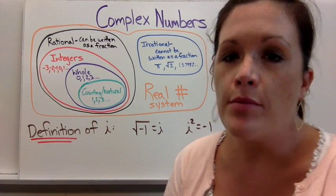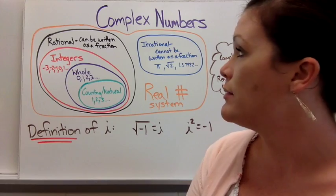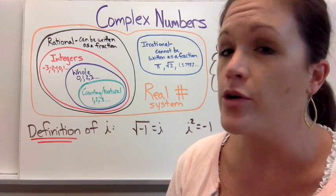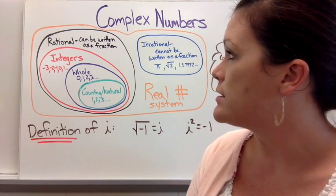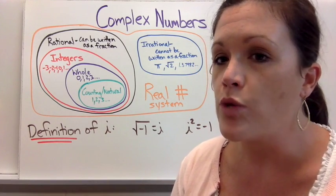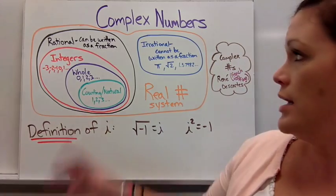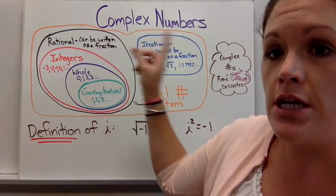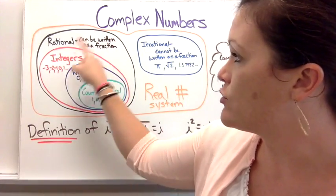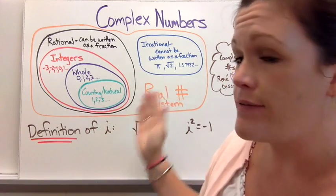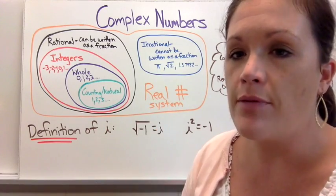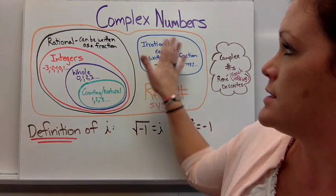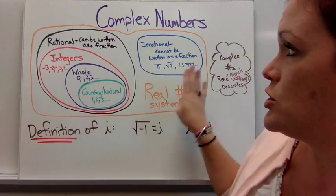Let's take a look at what complex numbers are. I've drawn a picture here that you might want to pause the video and jot down in your notes if it does not look familiar, but you should have seen this before at some point during your math career. These are our real number system, made up of rational numbers and irrational numbers — numbers that can be written as a fraction and numbers that cannot — and then we have our smaller categories. I'm showing you this because this is where complex numbers do not belong.